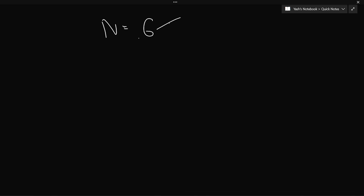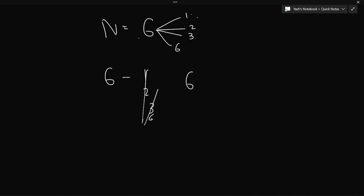Let's say n is given as 6. The divisors of 6 are 1, 2, 3, and 6. From the given number 6 we have to subtract it by one of its divisors. We can subtract 6 with 1, 2, or 3, but not 6 itself. So we can subtract n by any of its divisors except the number itself.